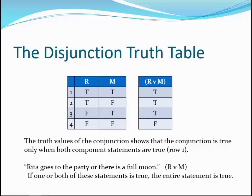Here's the truth table for disjunctions. In this example, 'Rita is going to the party' is represented by capital R, and 'There is a full moon' is represented by capital M. The base table on the left stays the same, showing all possible combinations of truth values for any two statements. Row one shows that if Rita goes to the party and it is a full moon, the disjunction is true. Rows two and three show that if only one of the statements is true, the entire compound statement is true. The only time the disjunction is false is when both component statements are false, represented in row four.